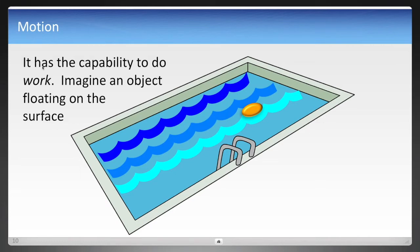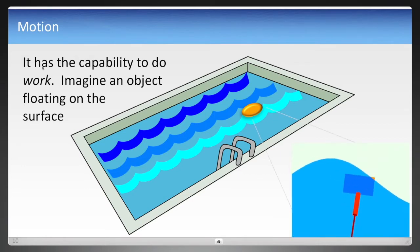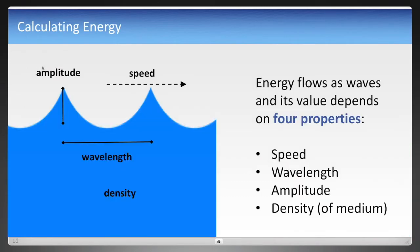And in physics, energy is the capability or the capacity to do work. So imagine an object now floating on the surface of that pool. And here in this animated illustration, you see the ability of waves, and they're able to move this object. And the energy of those waves can be calculated based on the wave's amplitude, the speed at which it's traveling, the distance between waves, known as the wavelength, and it must be traveling in a medium with a known density. And these four properties are very important for calculating energy. And we're going to come back to that when we start talking about the energy within the universe.